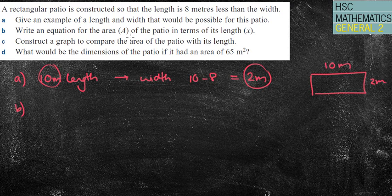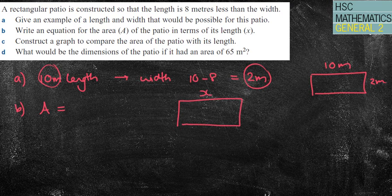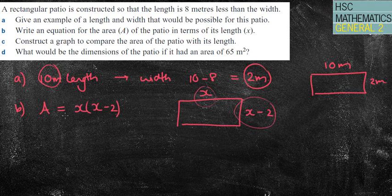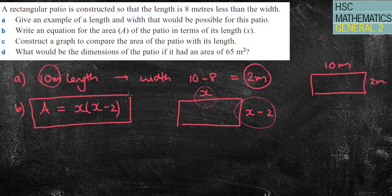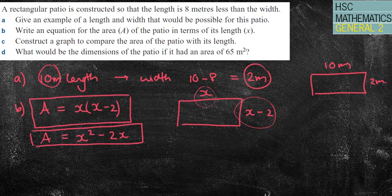Write an equation for the area of the patio in terms of its length, x. Well, my area would equal, instead of having 10 as my length, I'm going to put x as my length. Instead of having 2 meters, which is 8 meters less than, I'm going to have x minus 2. That way, I can have a generalized rule. I'm going to put here x brackets, x minus 2. That's because I'm going to multiply these two sides together to get the area. I could leave my answer in that form, or I could also put as area equals x squared minus 2x. One of those two answers would suffice.